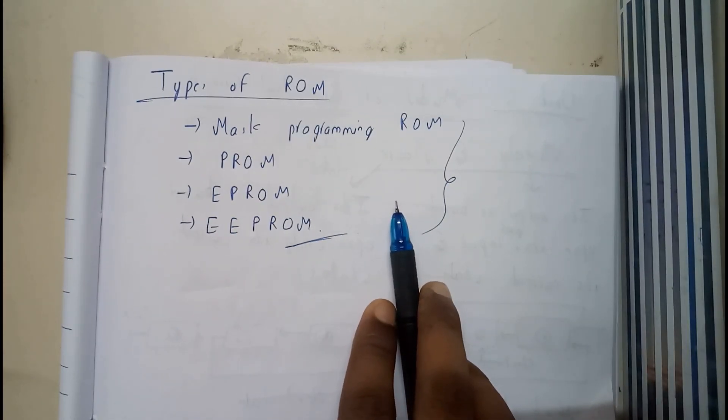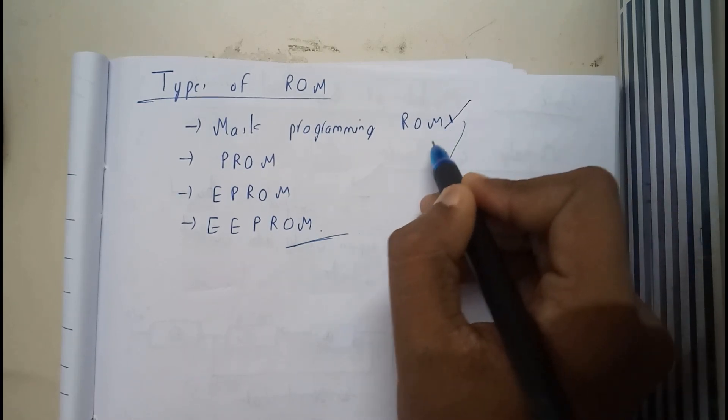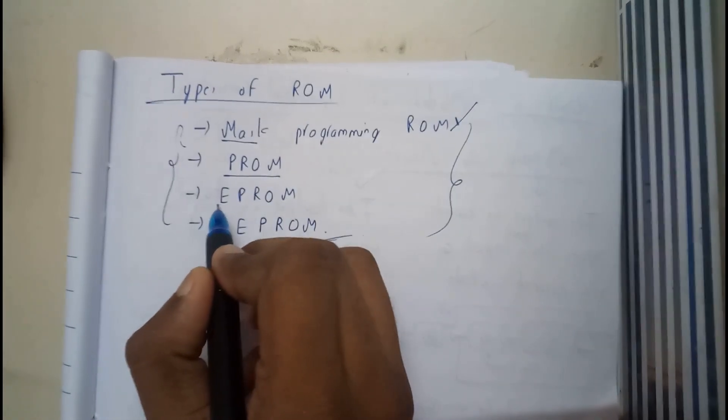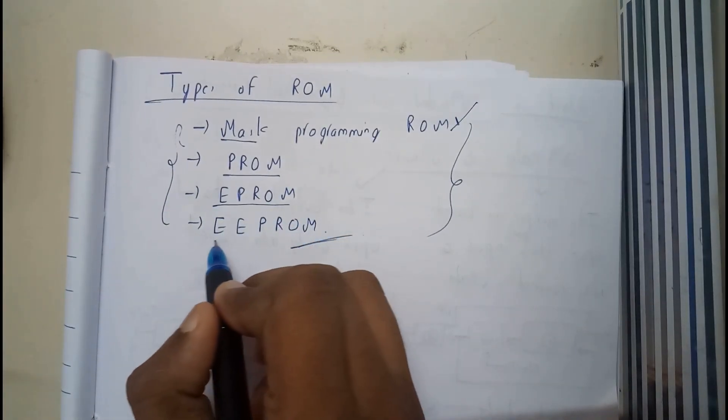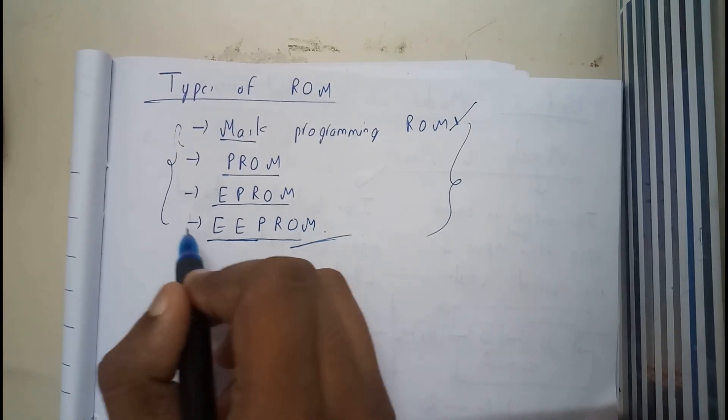So what is mask ROM? These ROMs are divided into four types: mask ROM, programmable ROM, erasable programmable ROM, and electrically erasable programmable ROM.